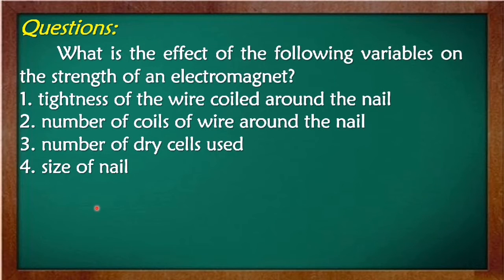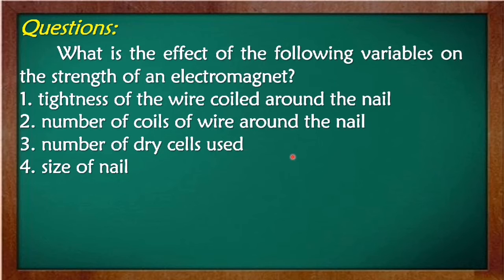These are now the questions that you're going to answer after performing the activity. What is the effect of the following variables on the strength of an electromagnet? The tightness of the wire coils around the nail; the number of coils of wire around the nail; the number of dry cells used; and the size of the nail.